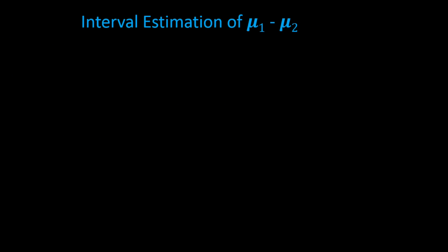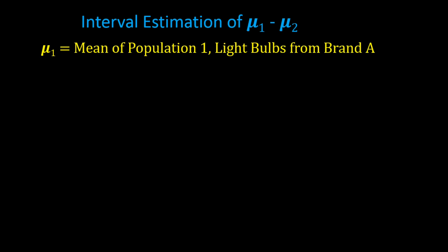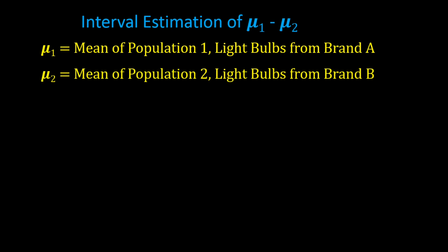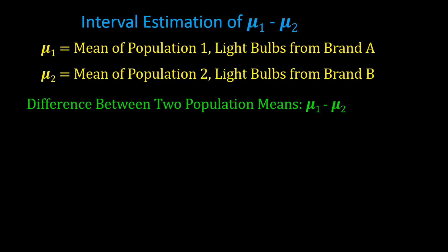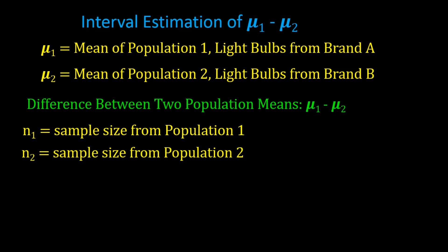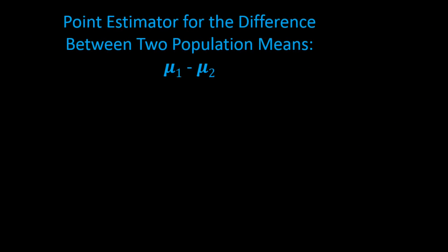Let's start with an example of interval estimation for the difference between two means, mu 1 minus mu 2. We define mu 1 as the mean of population 1 (brand A light bulbs) and mu 2 as the mean of population 2 (brand B light bulbs). We take samples n1 and n2, obtaining sample means x bar 1 and x bar 2. The point estimator for the difference between two population means is x bar 1 minus x bar 2.